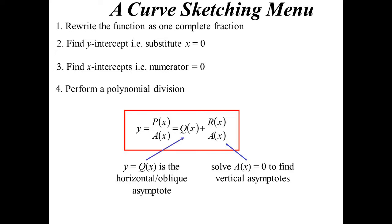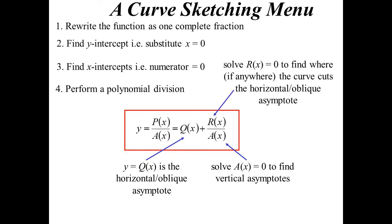The quotient ends up being the horizontal or the oblique asymptote, depending on what it happens to be. And if you want to find out whether it's possible for the curve to cut that asymptote, then we have a look at the remainder. And if the remainder can equal 0, then it's possible for the curve to cut the asymptote at that particular x value.